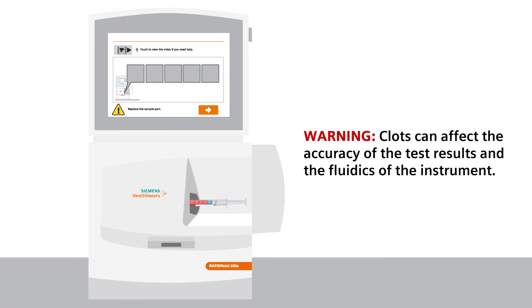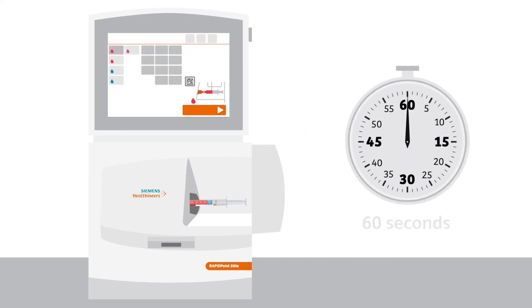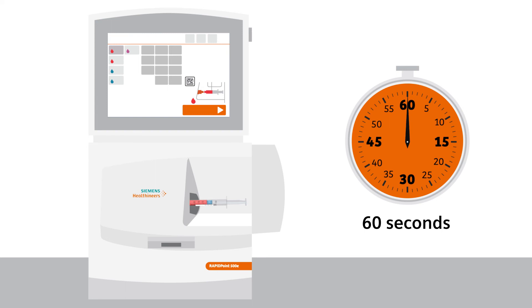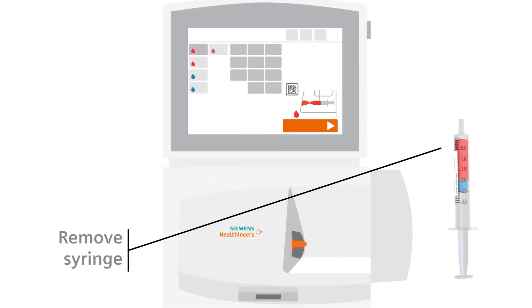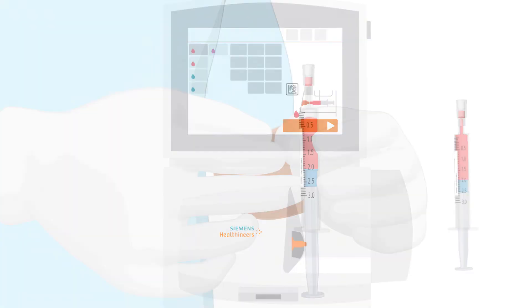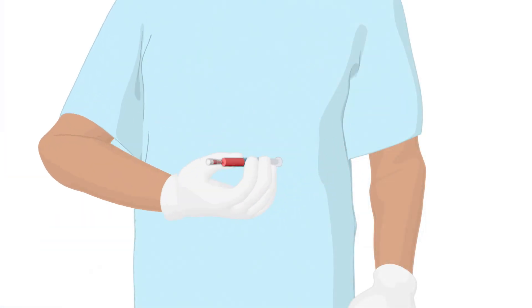Recognize that a sample containing blood clots should not be used on the blood gas analyzer because it can affect not only the accuracy of the patient results, but also negatively impact the operation of the blood gas analyzer. The patient's blood gas results will be ready within 60 seconds. Remove the syringe from the analyzer, reattach the filter cap, and debubble the sample. If you need to repeat the test, remix the sample prior to analysis.